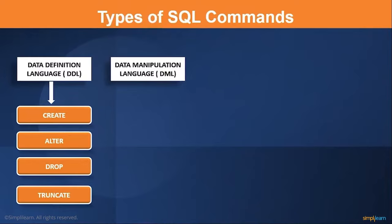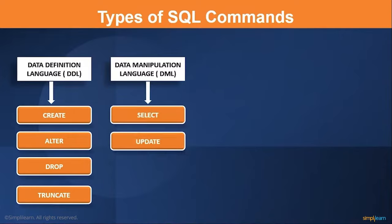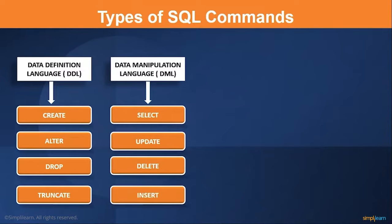The next one is Data Manipulation Language or DML. DML is used to access and manipulate data in tables. Commands used in DML are: Select — used to extract data from tables; Update — used to update a value in the existing table; Delete — unlike the drop command, the delete command is used to delete a specific row in the table; Insert — used to insert a new value into the table.